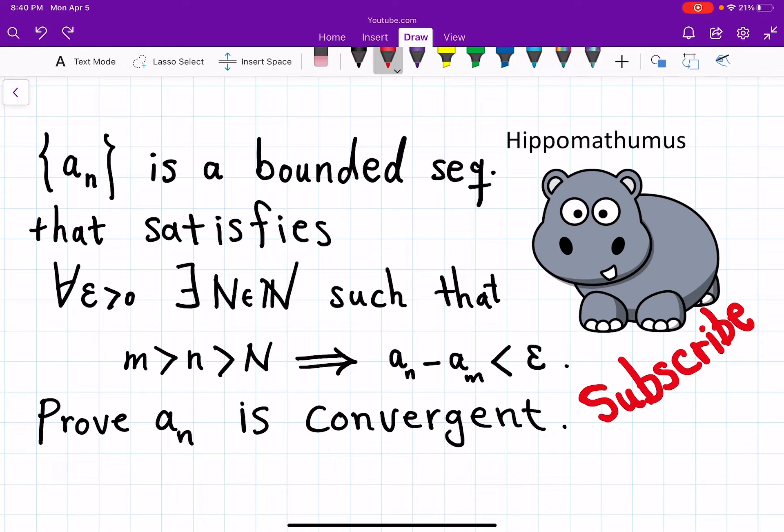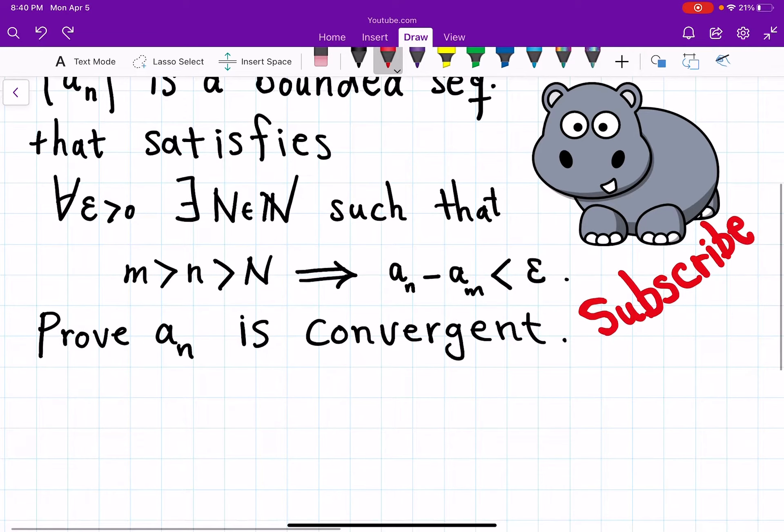So another way of interpreting this condition is that if your aₙ is say at this level, if this is your aₙ, then the future ones, aₘ's, will not drop all the way down say to here.